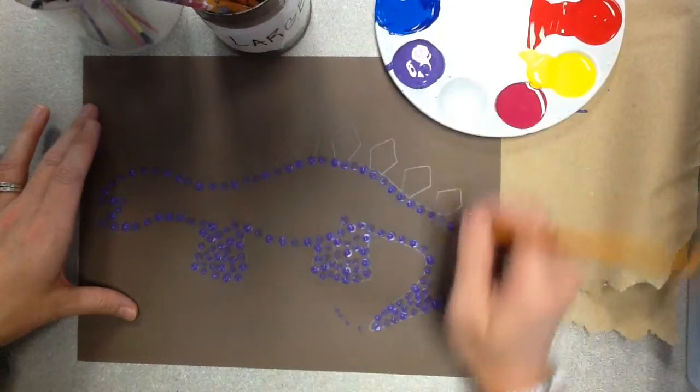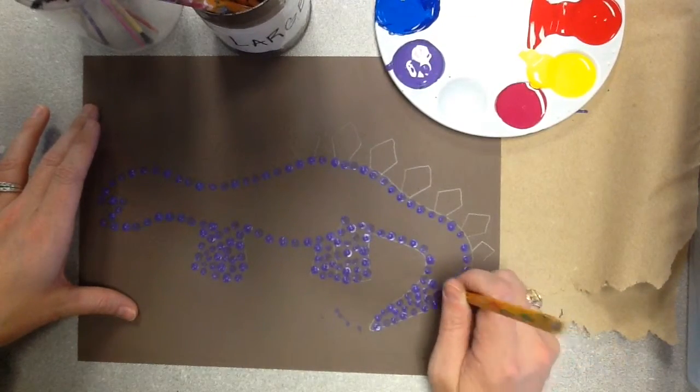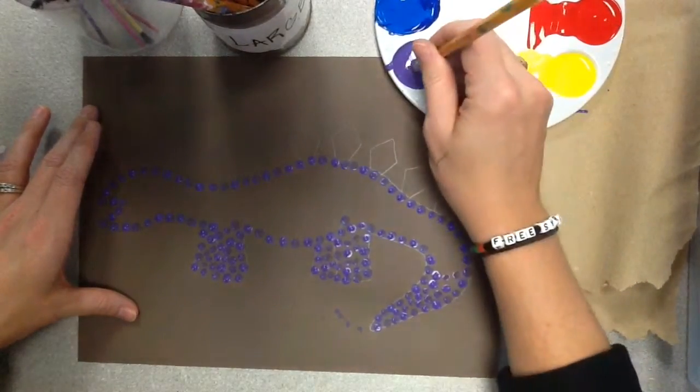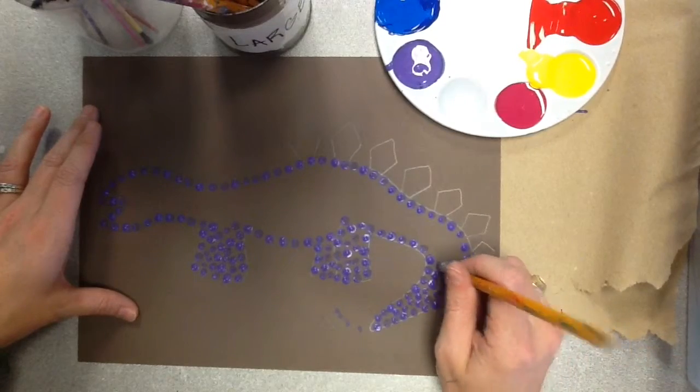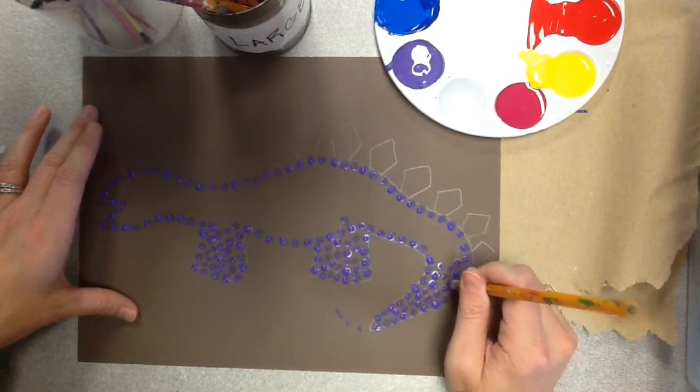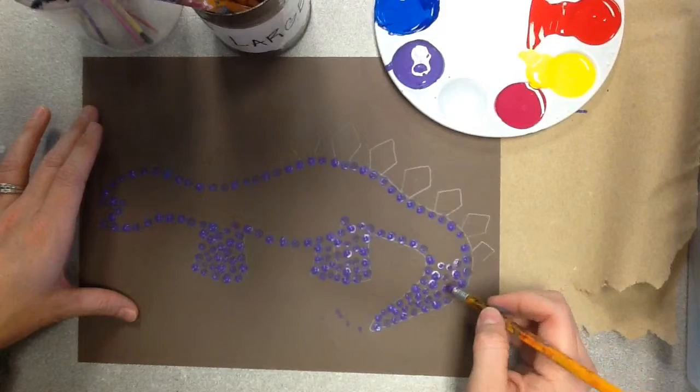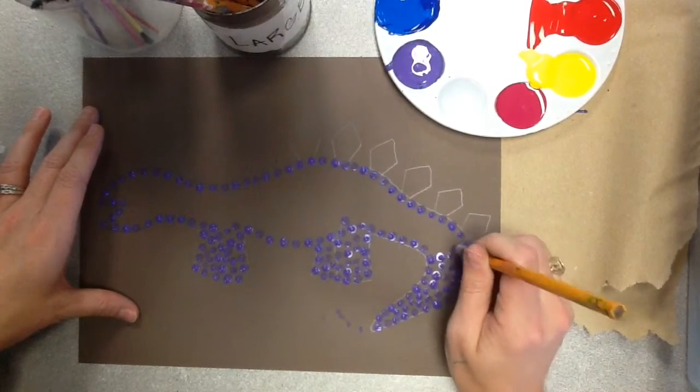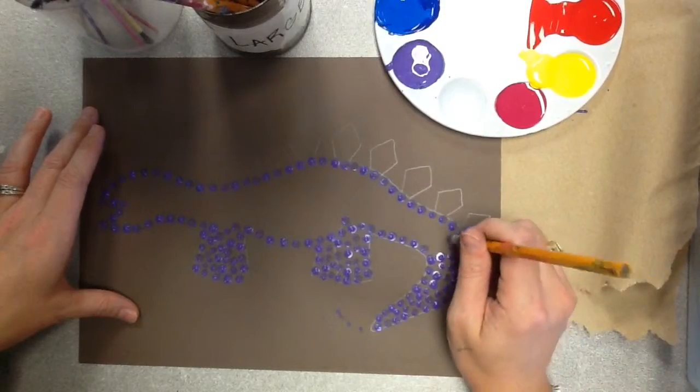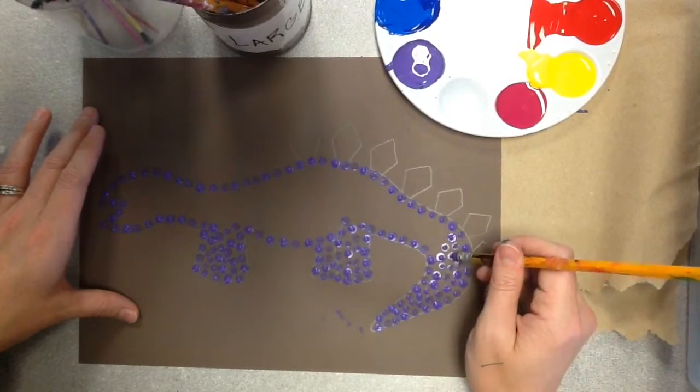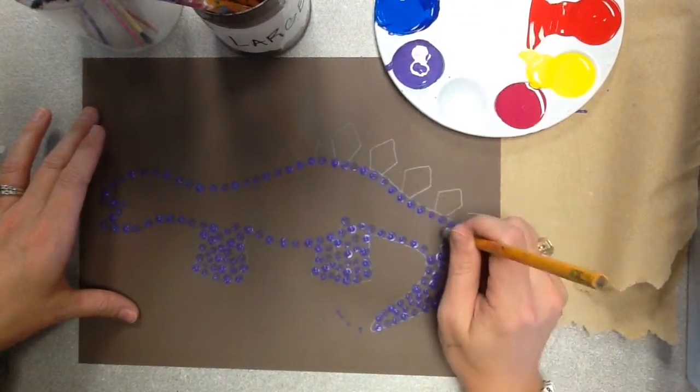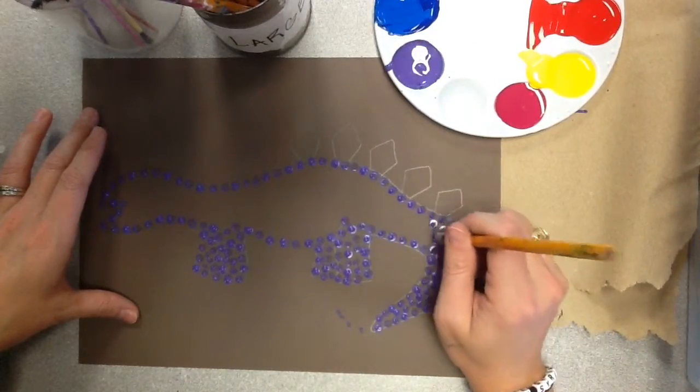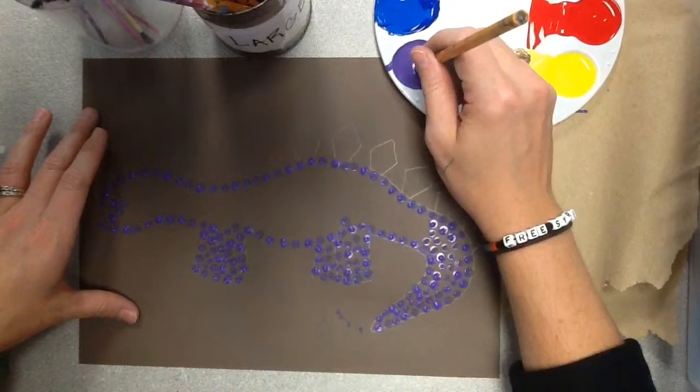Again, make sure that your tool is standing up tall and not leaning to the side, because if it's leaning to the side, then you're going to end up messing up your dots and they're going to be different sizes when you want them to all be the same size. And if you end up having little holes like that, you could actually go back in with a smaller tool and fill in those small holes with a smaller dot.